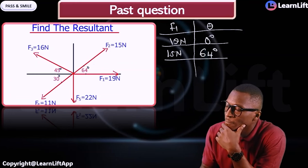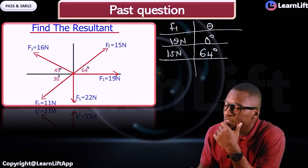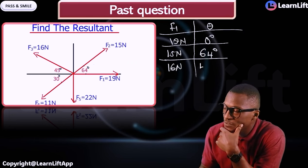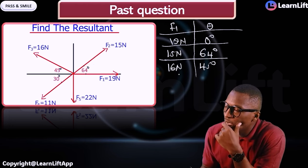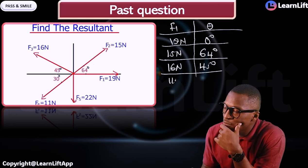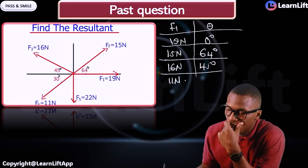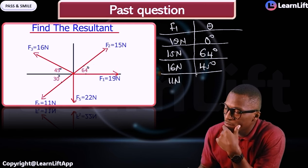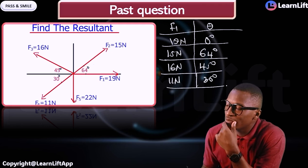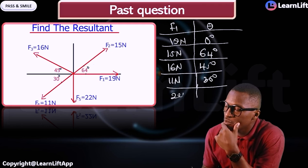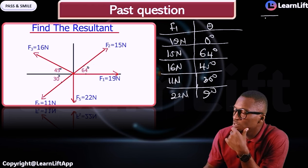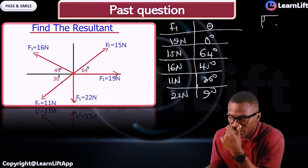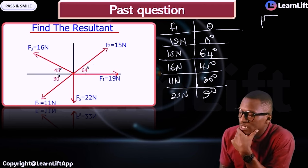F3 is 16 N at 45°. F4 is 11 N at 30°. The last one, F5, is 22 N at 90° — you can see it is perpendicular. We now know all the angles, so let's find Fx and Fy.